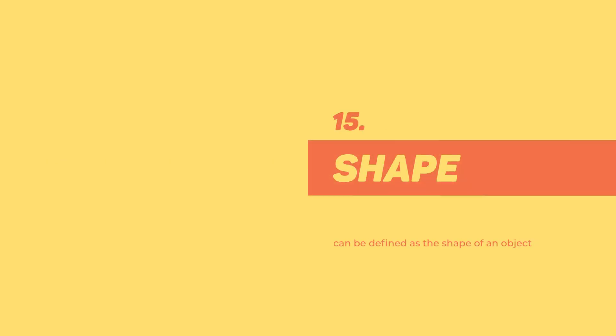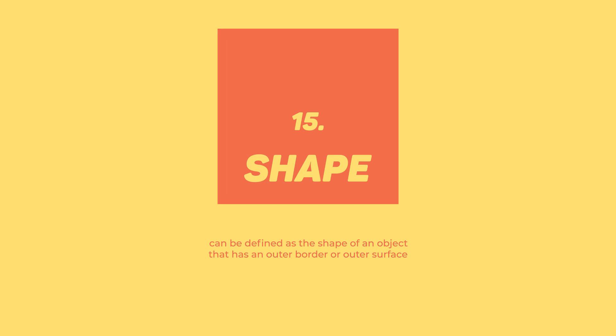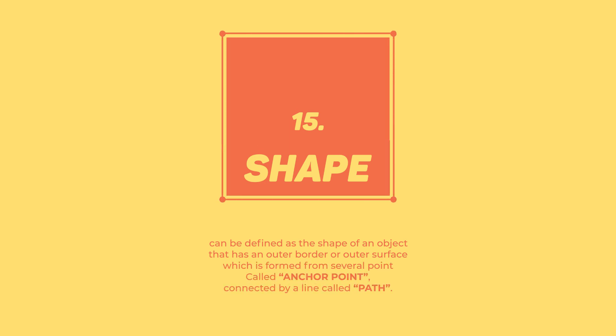Shape — can be defined as the shape of an object that has an outer border or outer surface, which is formed from several points called Anchor Points, connected by a line called Path.